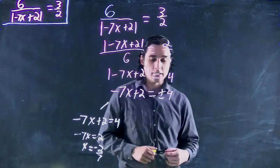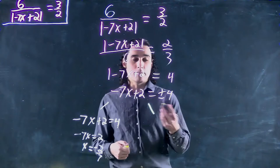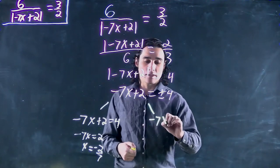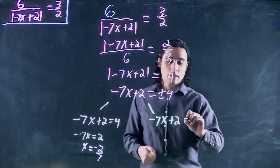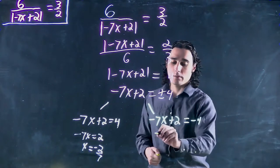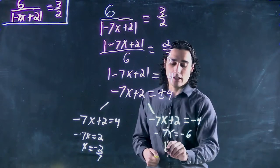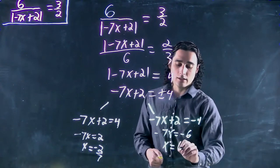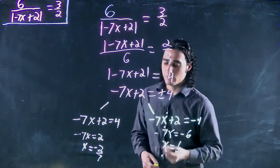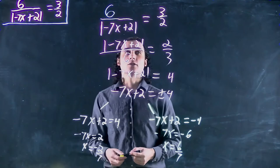And also look at the other case. Consider the minus case in this one. So minus 7x plus 2 equals minus 4. Minus 7x equals minus 6. Therefore, x equals 6 over 7. As before, two viable solutions to our problem.